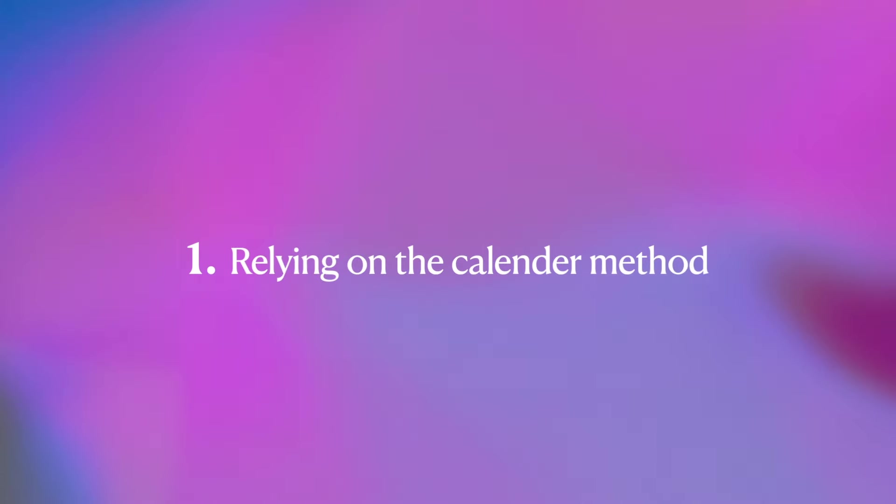The first mistake is relying on the calendar method to arrive at your ovulation. The calendar method is very simple and basic — it's simply subtracting some numbers to arrive at your ovulation day. For example, if you have a 28-day cycle, you subtract 14, and the answer is day 14, which is your estimated ovulation day. If that is your only way of arriving at your ovulation period, then you are making a big mistake.